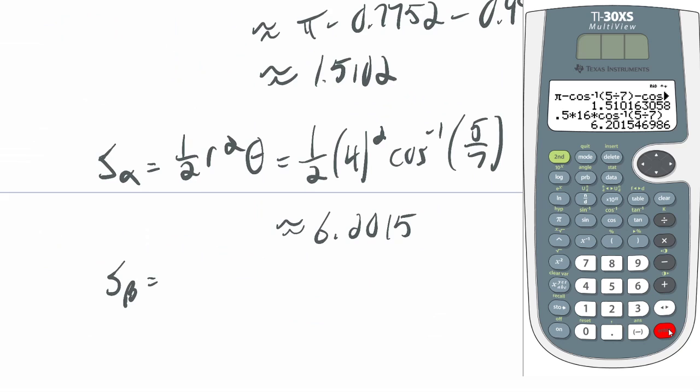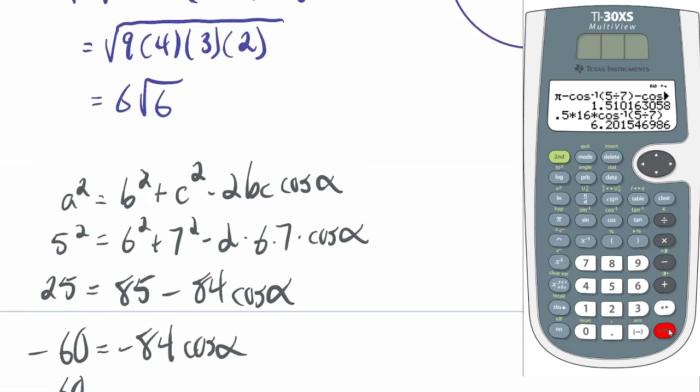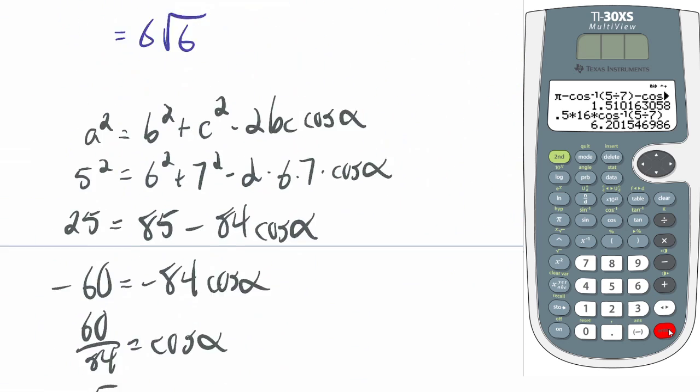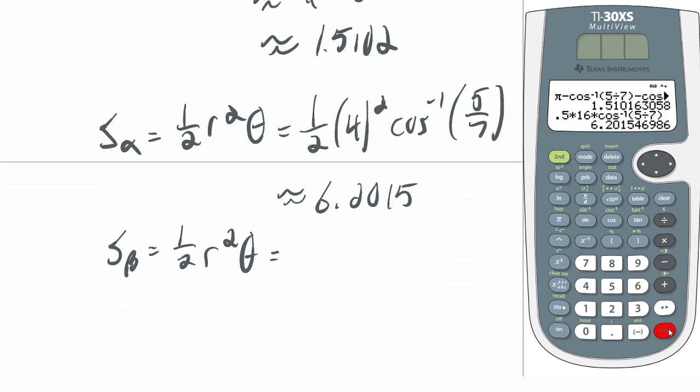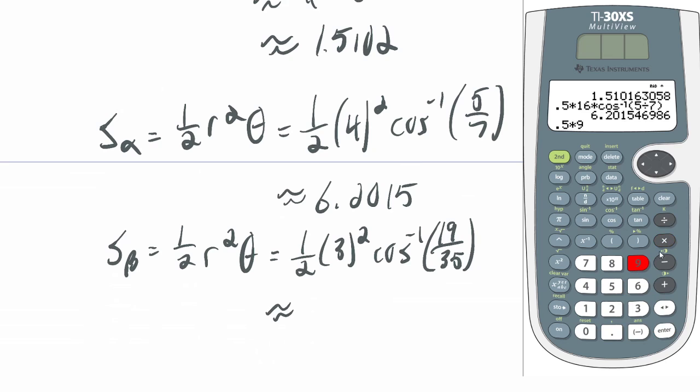So then sector beta is also 1/2 r squared theta. Angle beta goes with radius 3. So 1/2 times 3 squared times cosine inverse of 19 over 35. So 0.5 times 9 times cosine inverse of 19 over 35. So I get 4.4863.